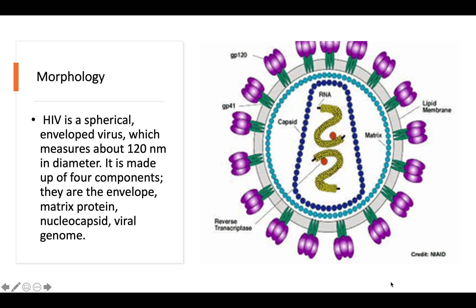Looking at the morphology, the virus is a spherical and enveloped virus. From the figure you can see HIV is a spherical virus. Being an enveloped virus means it contains a lipid bilayer, and this lipid bilayer is derived from the host.